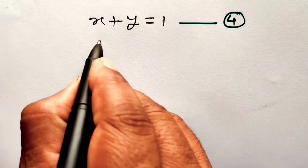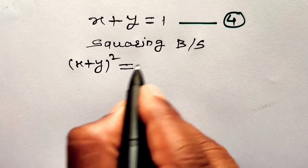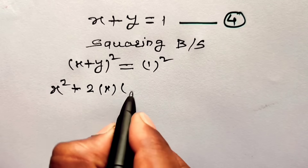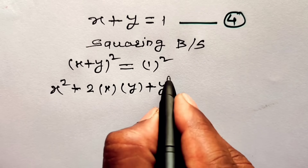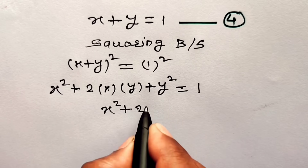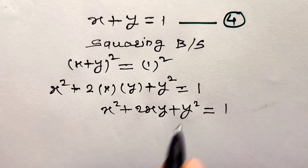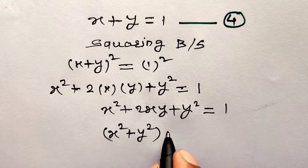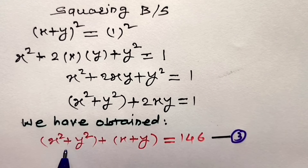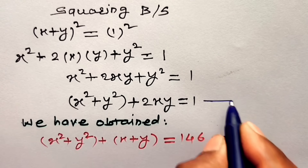Squaring both sides of equation 4, we get x plus y squared equals 1 squared. Expanding: first term squared plus 2 times first term into second term plus second term squared equals 1. So this can be written as x squared plus 2xy plus y squared equals 1. Collecting square terms, x squared plus y squared plus 2xy equals 1. Consider this as equation number 5. And we already have equation number 3: x squared plus y squared plus x plus y equals 146.